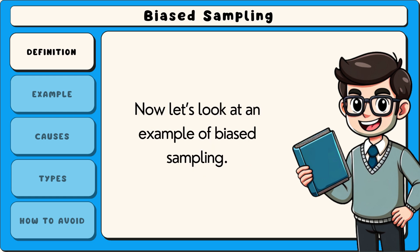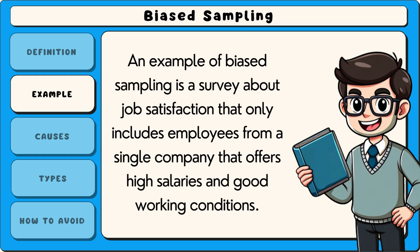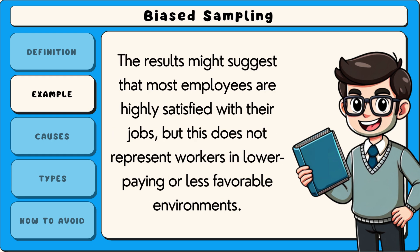Now let's look at an example of biased sampling. A survey about job satisfaction that only includes employees from a single company that offers high salaries and good working conditions might suggest that most employees are highly satisfied with their jobs, but this does not represent workers in lower-paying or less favourable environments.